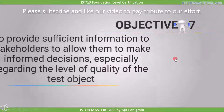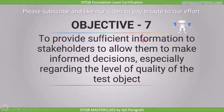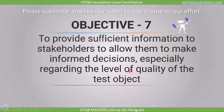The seventh objective is to provide sufficient information to stakeholders to allow them to make informed decisions, especially regarding the level of quality of the test object. When we find defects, it is not necessary that we fix all of them before release. What we can do is provide sufficient information to the stakeholder so they can take a decision based on the defect and the risk associated with it.